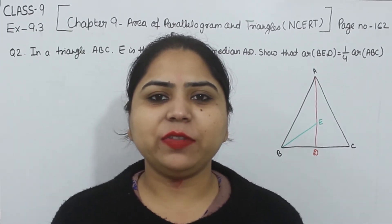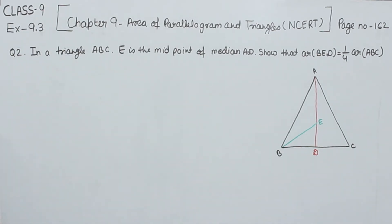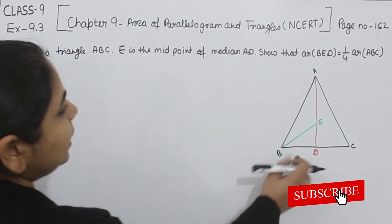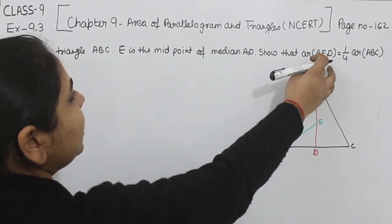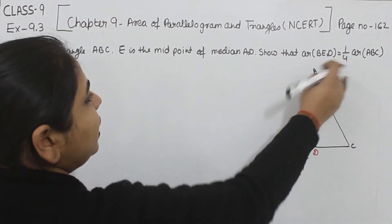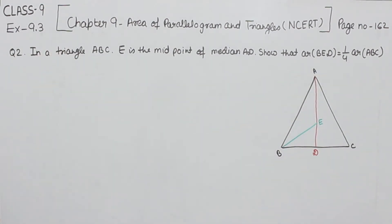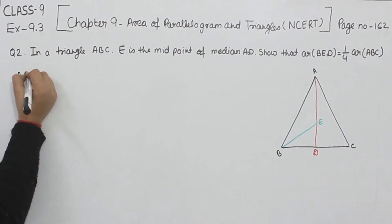Hello everyone, this is Preeti. We are here with another question of Exercise 9.3, page number 162, question number 2. In triangle ABC, E is the midpoint of the median AD. Show that the area of triangle BED is one-fourth of the area of triangle ABC. This is what we have to prove.